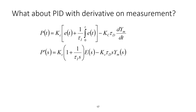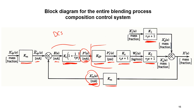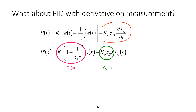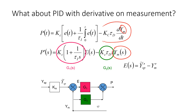For PID with derivative on measurement — this doesn't fit the standard form where we just had a PI controller. We use derivative on measurement to avoid derivative kick versus derivative on error. We have G1 (the PI part) and G2 (the derivative part), where G2 is a function of YM, the measured value. We take our measured value through G2, the derivative part, and add it back in. The PID output is the PI output plus the D output — we add those together to get proportional, integral, and derivative action.